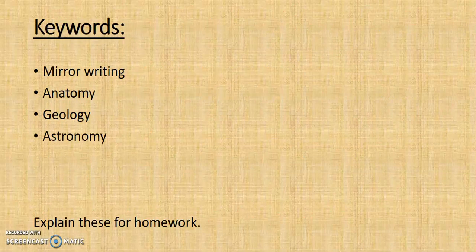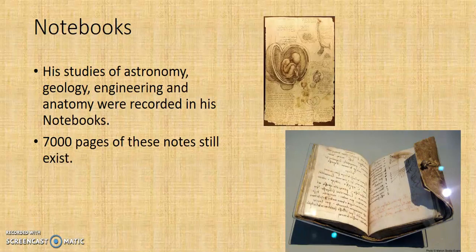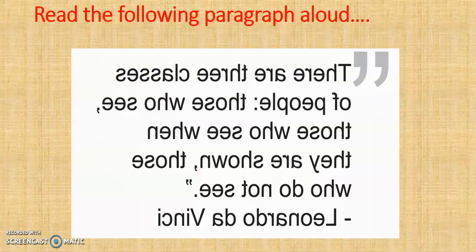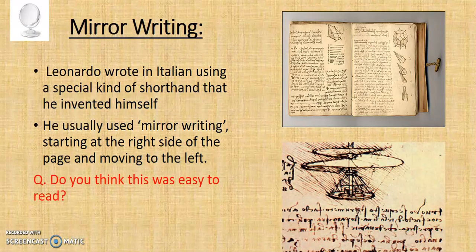When Leonardo was writing his notebooks, the key words to know are: mirror writing, anatomy, geology, and astronomy. In his studies of astronomy, geology, engineering, and anatomy, he recorded notes — 7,000 pages of these notes still exist. Leonardo wrote in his notebooks using mirror writing, that is writing from right to left, so no one read his notes until many years after his death. Today we have over 5,000 pages of his notebooks containing diagrams of machines and notes on botany, geology, and engineering. In Milan, Leonardo worked for the Duke of Milan. He invented several weapons of war such as a tank and a cannon. His notebooks were full of new ideas including designs for a helicopter, a submarine, and a parachute, but the Duke was not interested and would not give him funding for them.